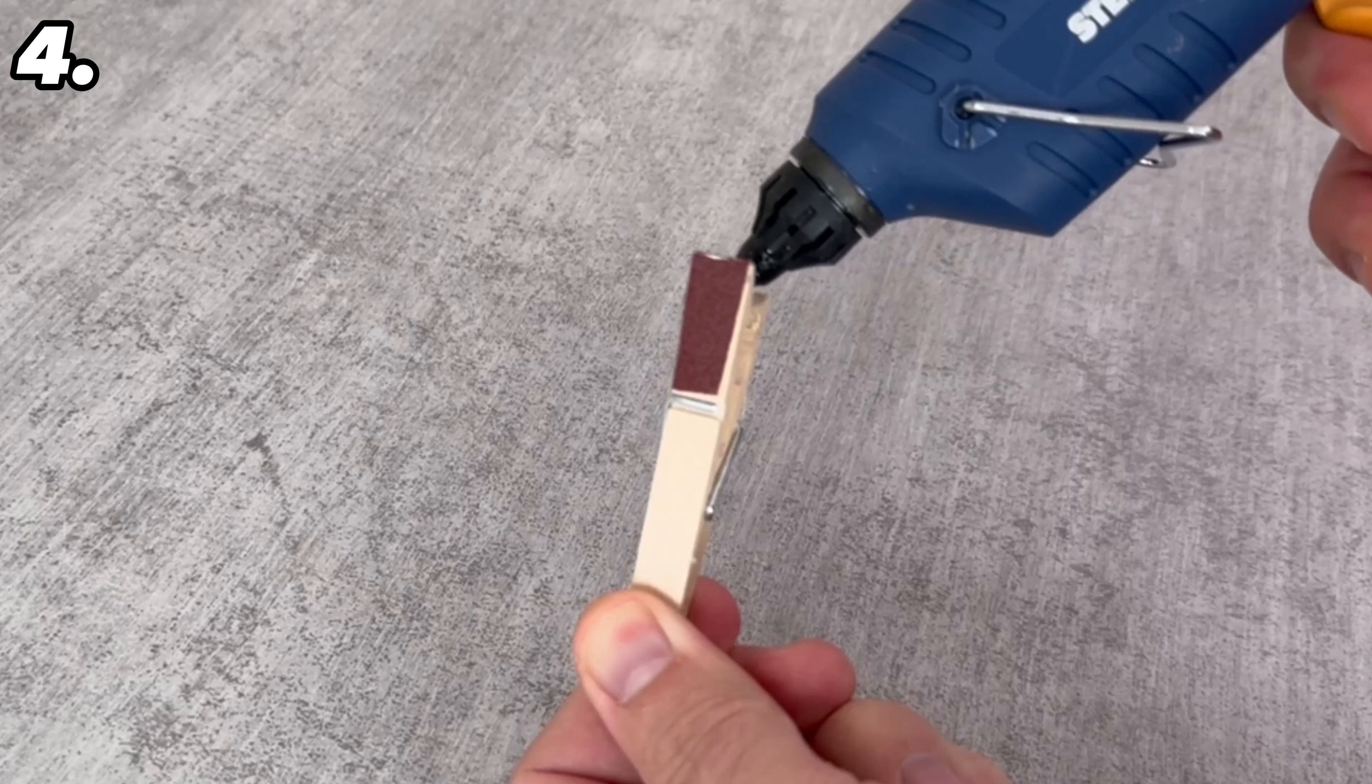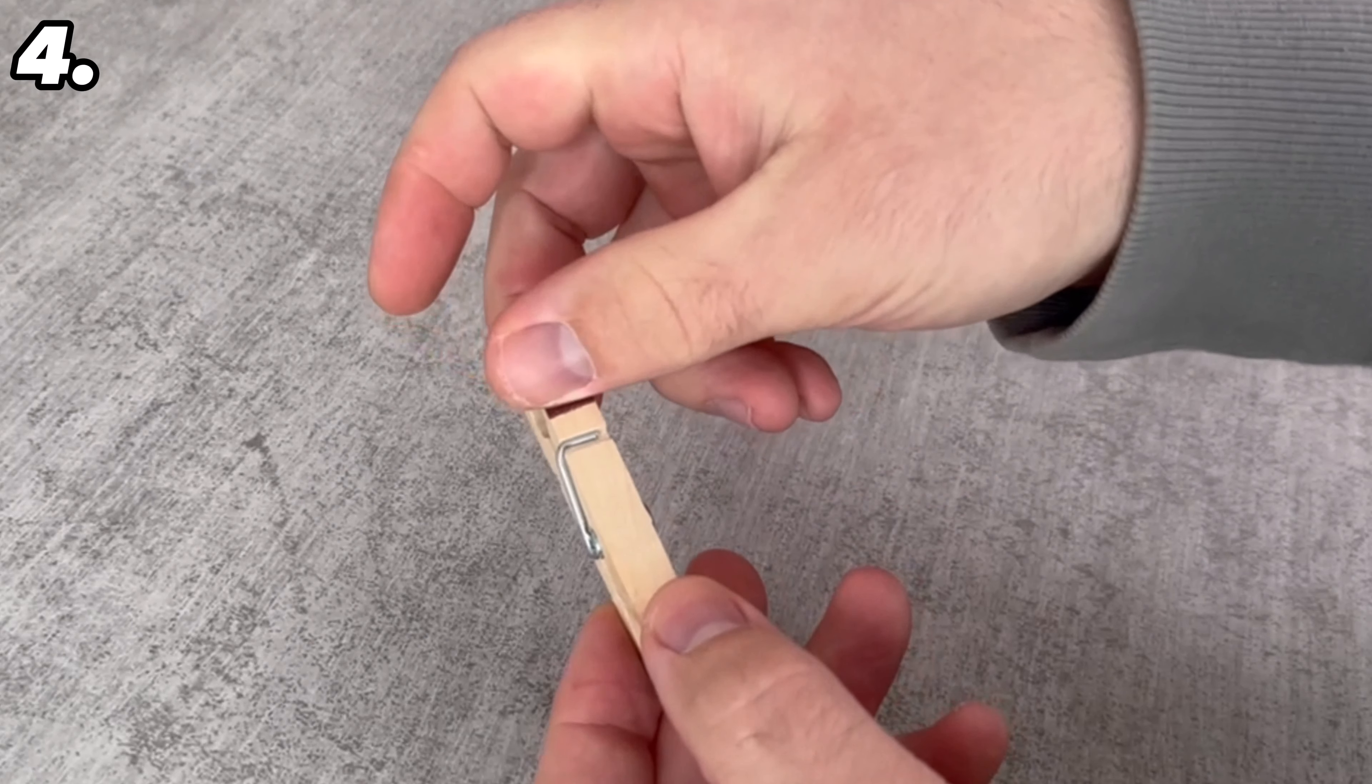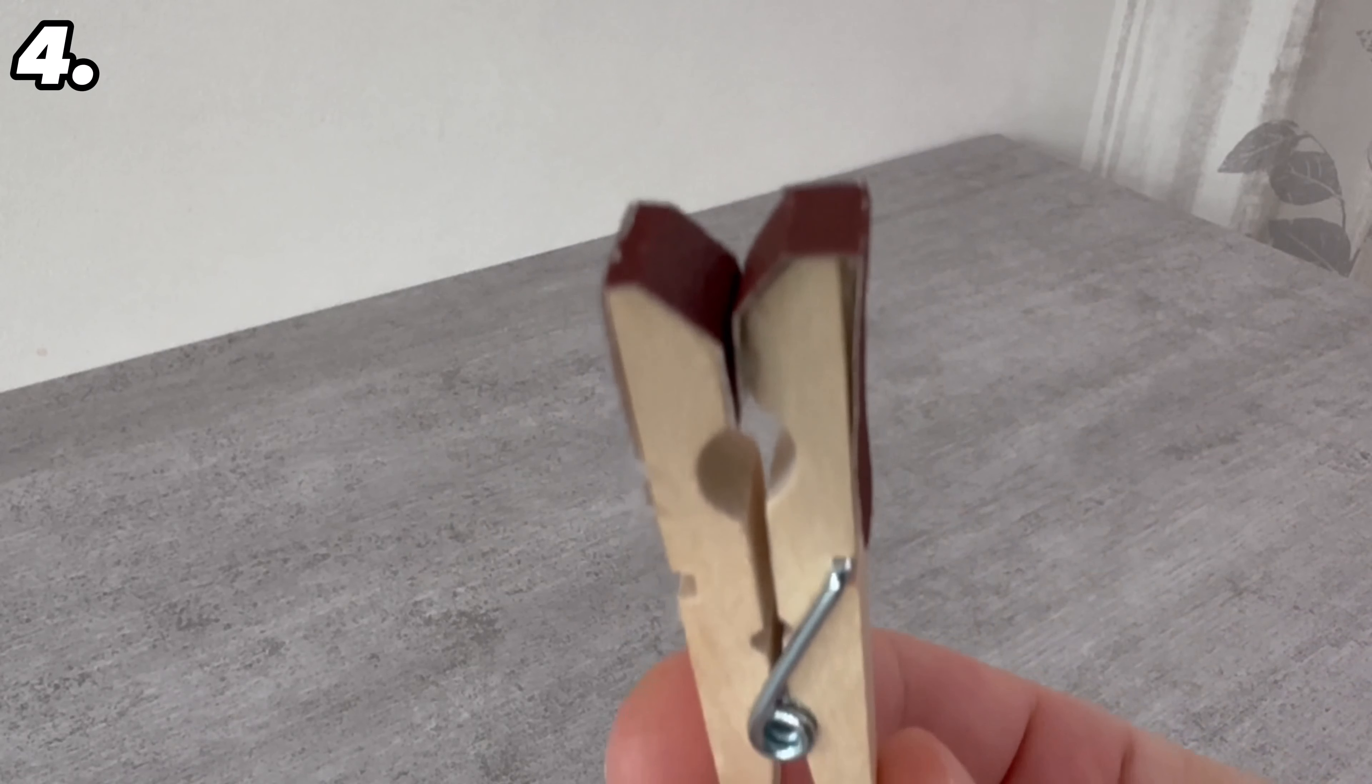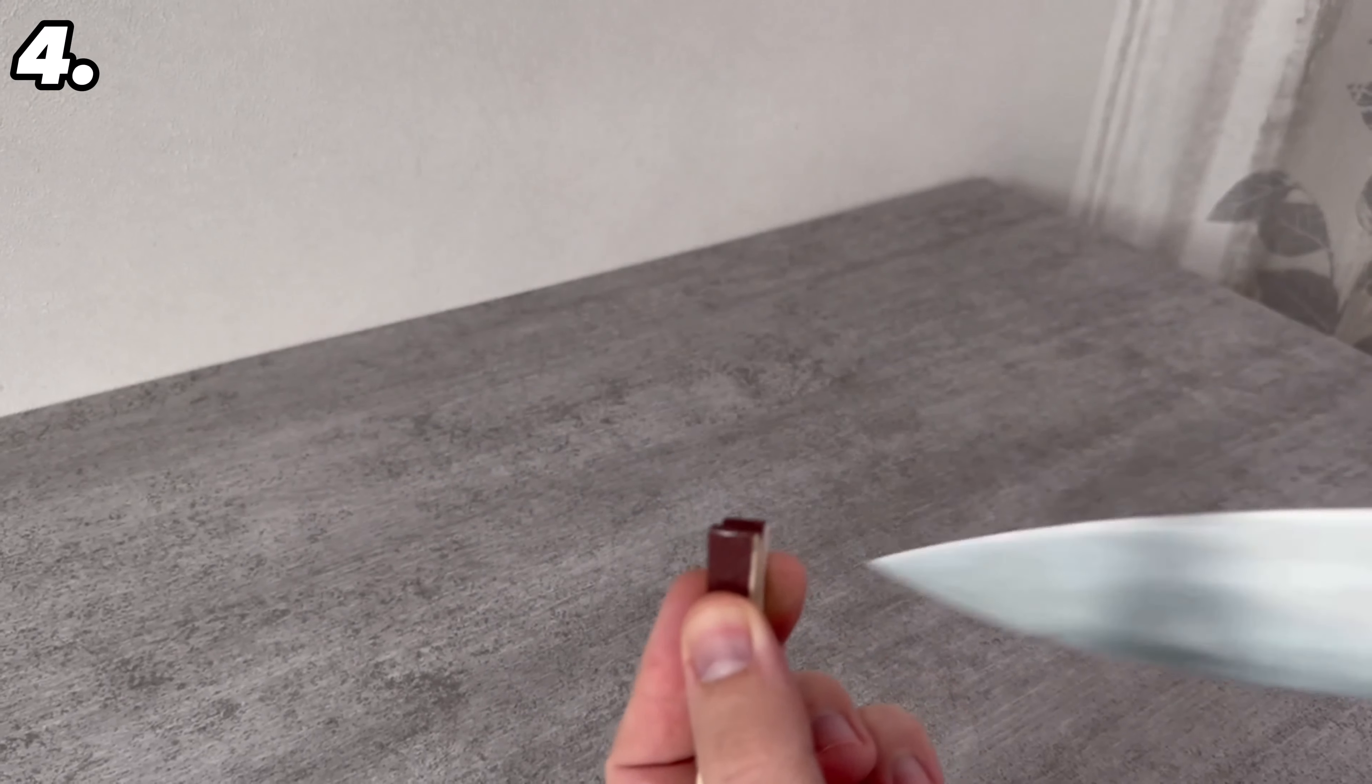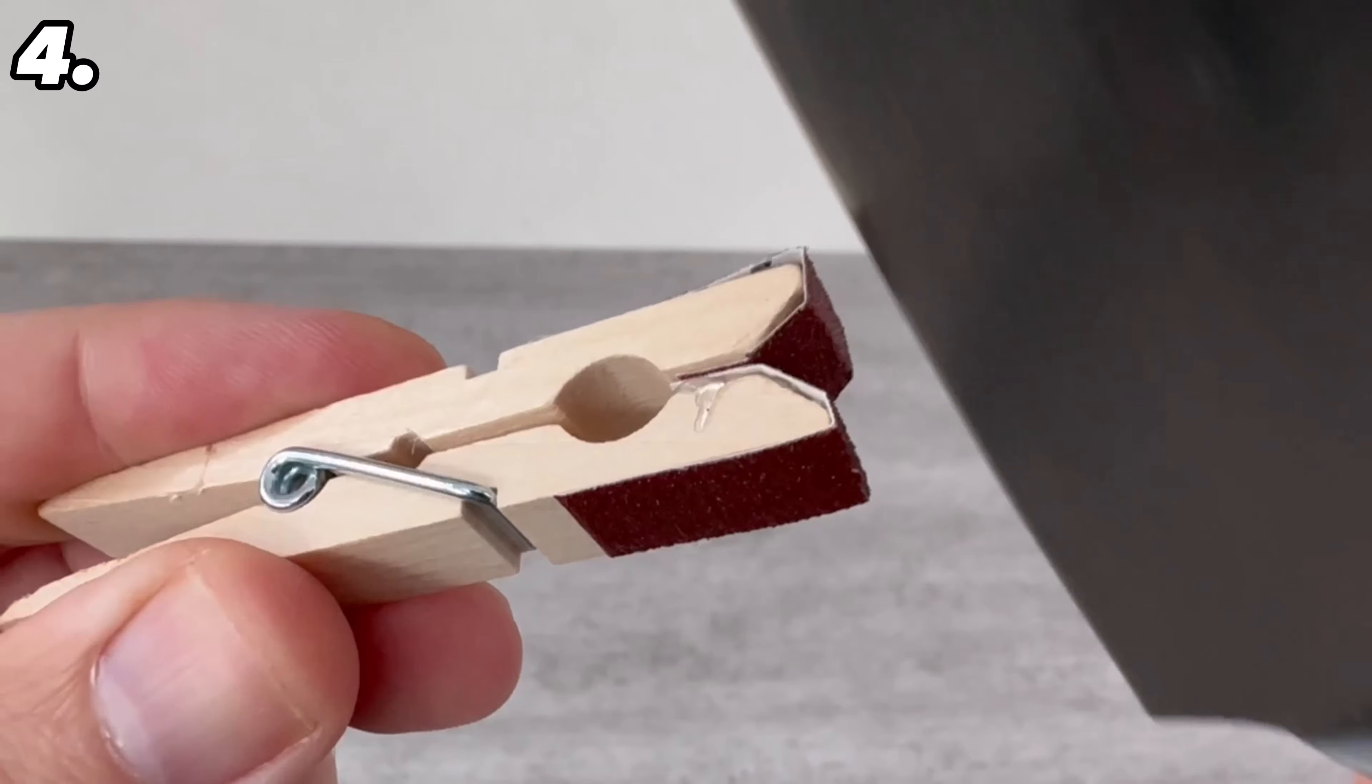This is how the clothespin with the sandpaper should look in the end. There is sandpaper in between. We can open and close the clothespin. Now grab your knife. You can hold the clothespin carefully in your hand and pull it through with the knife. This will completely sharpen your knife again with the help of a clothespin and some sandpaper. You can now put the clothespin in your cupboard and take it out every time your knives have become blunt.